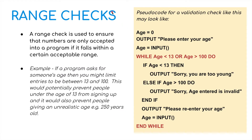A range check is used to ensure that numbers are only accepted into a program if they fall within a certain acceptable range. For example, if a program asks for someone's age, you might limit entries to between 13 and 100 years old. This would potentially prevent people under the age of 13 from signing up, and would also prevent people giving an unrealistic age such as 250 years old. This might be useful for something like signing up to Instagram or Facebook.